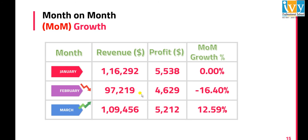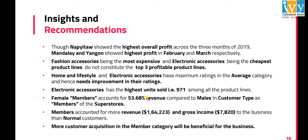Regarding month-on-month growth, February had a downward trend — that is, negative MOM growth — and March has an upward trend compared to February. Also, January is our highest profit month.